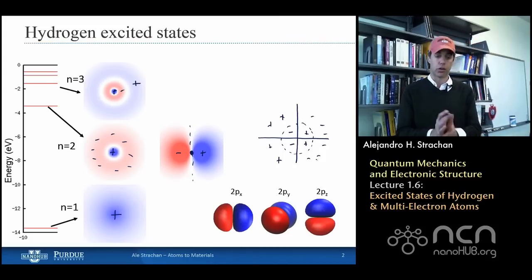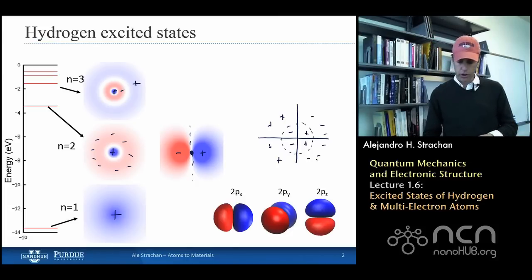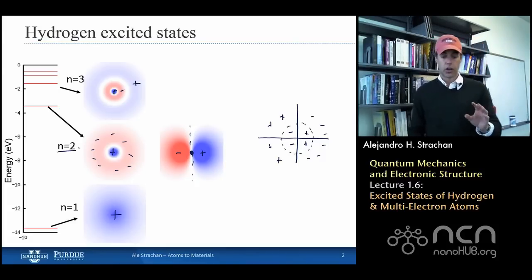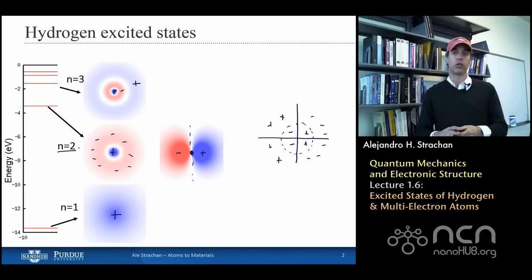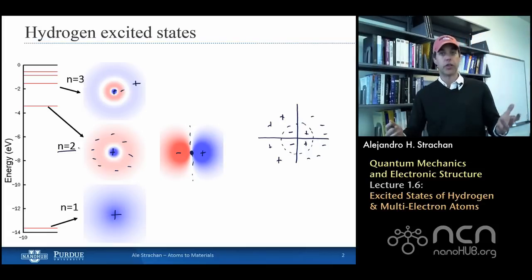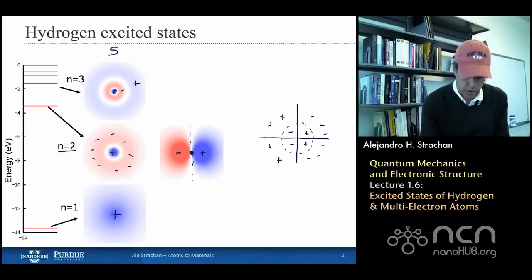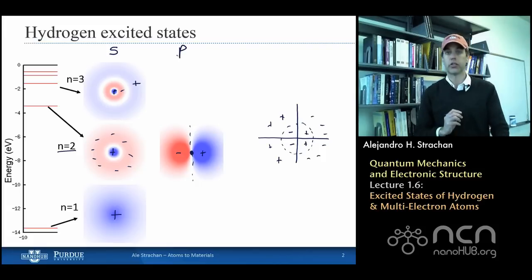It turns out there are three such wave functions that are n equals 2 — meaning a single node — aligned along x, y, and z. I can only have three because these wave functions need to be orthogonal to one another. So just with our knowledge of the number of nodes and the fact that we live in 3D, we conclude that for n equals 2, I have one possibility of a spherical node and three additional wave functions with planar nodes. The spherically symmetric family are called s states; the ones with angular momentum of one are called p states.